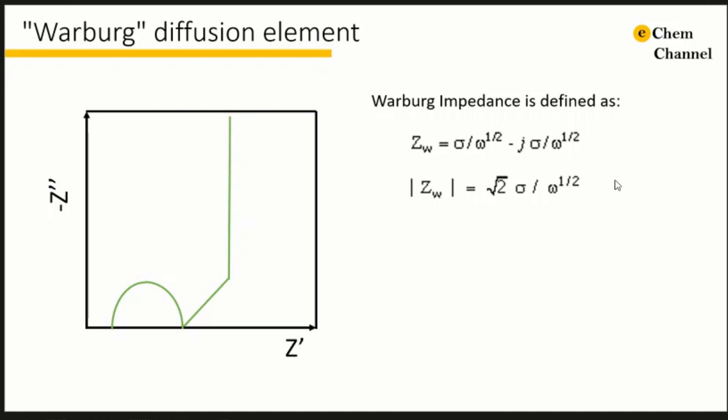The Warburg equation looks simple, but the equation for the Warburg constant, the sigma, is more complicated and is given here. The equation applies to both reversible and quasi-reversible reactions for which both halves of the couple are soluble.